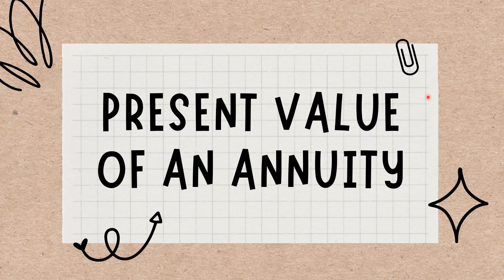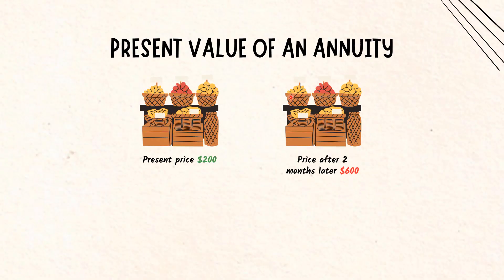What is the present value of an annuity? The present value of an annuity is the current value of future payments from an annuity, given a specified rate of return, or discount rate. The higher the discount rate, the lower the present value of the annuity. Present value is an important calculation that relies on the concept of the time value of money, whereby a dollar today is relatively more valuable in terms of its purchasing power than a dollar in the future.